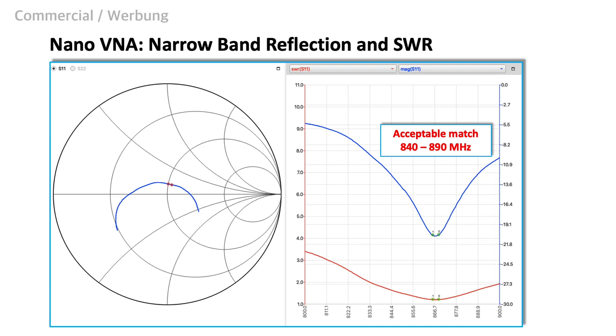I managed to adjust the antenna, but I must admit that I had to fiddle a lot to get this result. Eventually, I managed to adjust the resonance exactly to 866 MHz, which is the frequency that I use for my LoRa tests. The corresponding SWR is like 1.2, as you can see from the diagram. This is what we want.